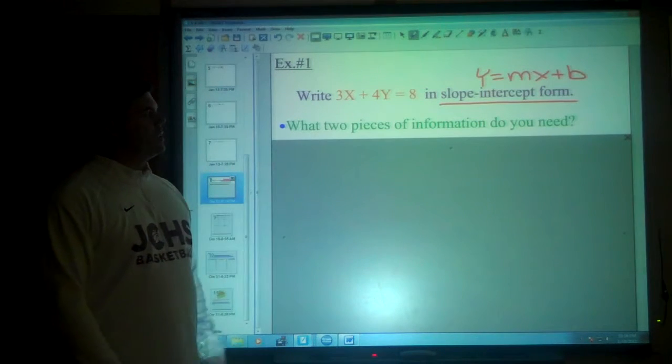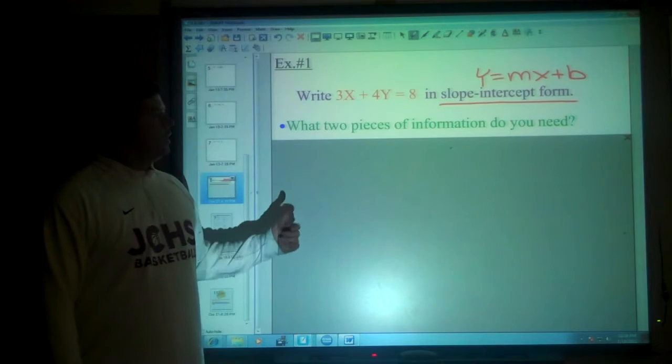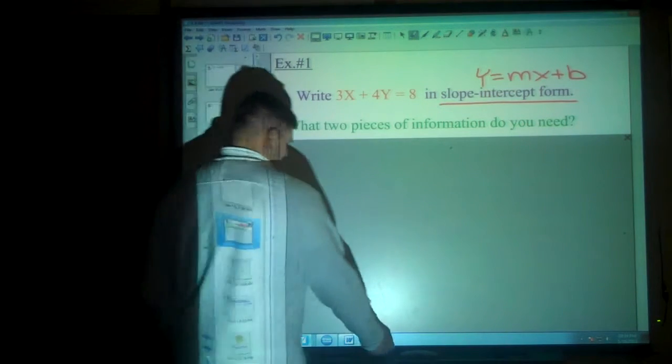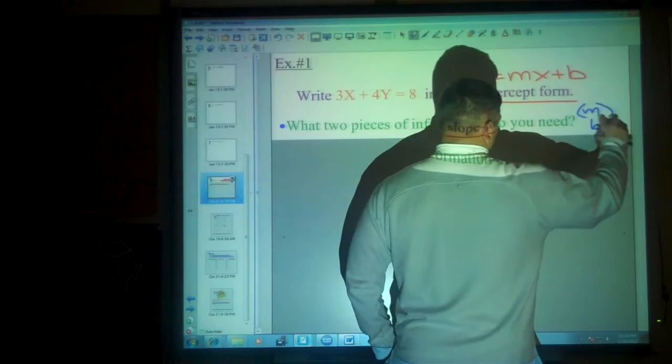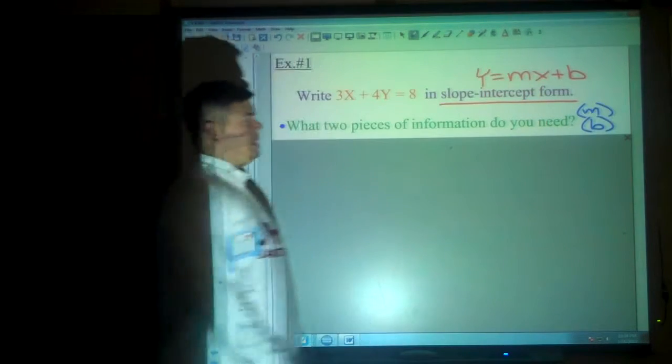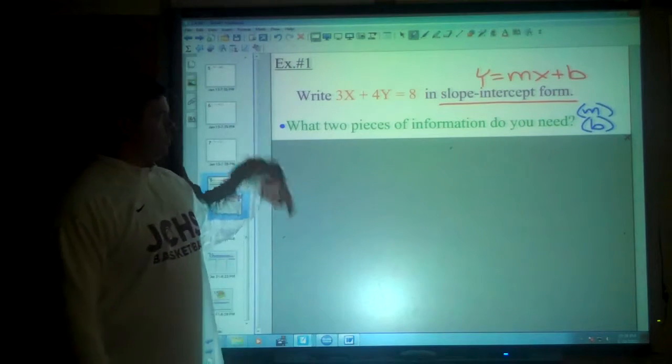Number one, what two pieces of information do you need? Whenever you have slope-intercept form, there's two pieces of info you need. You need the slope and you need the y-intercept, the b. Those are the two pieces we need.